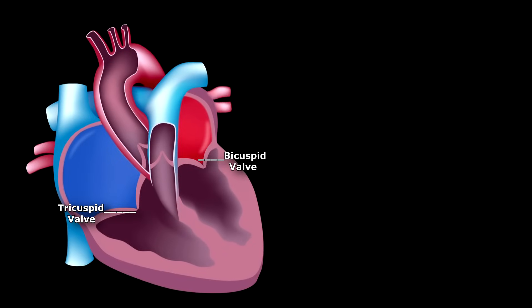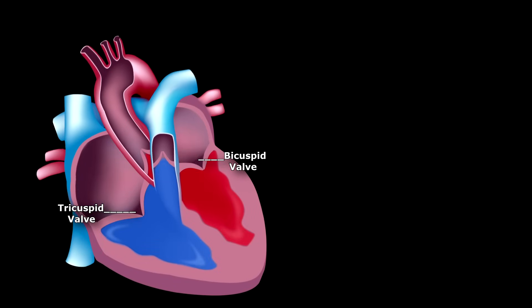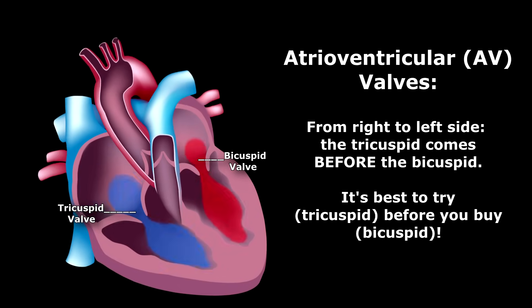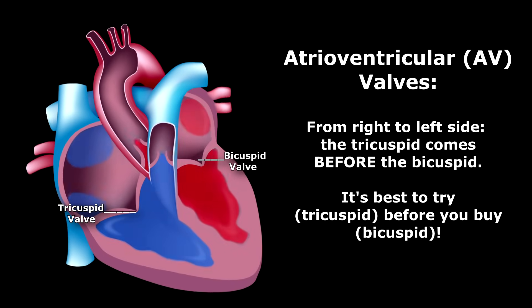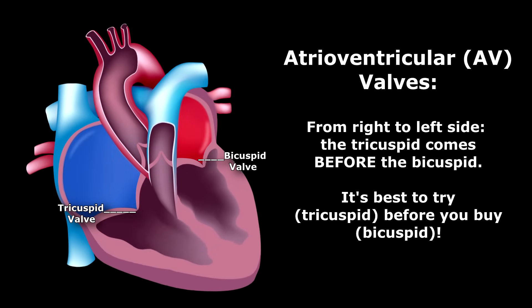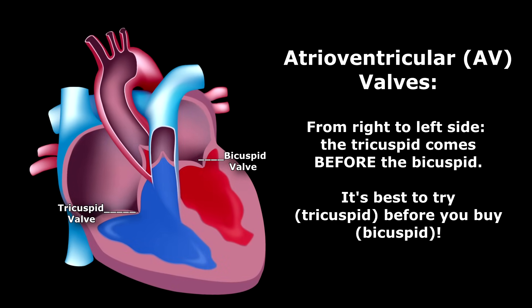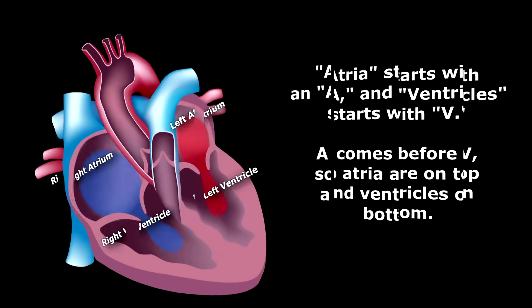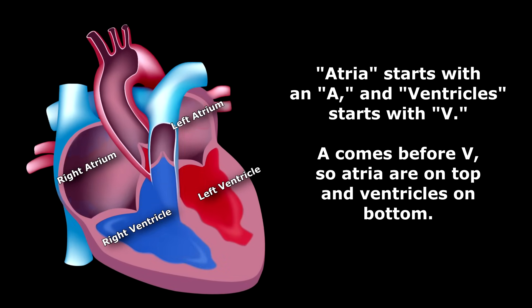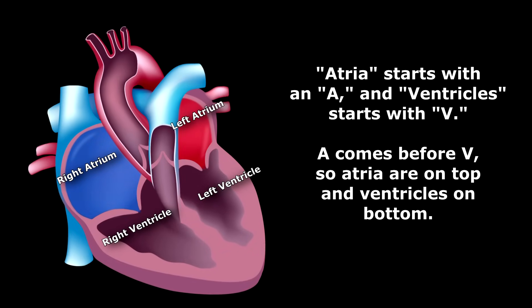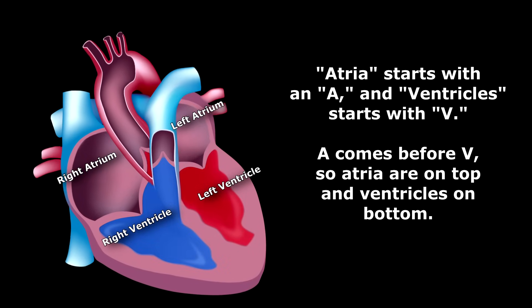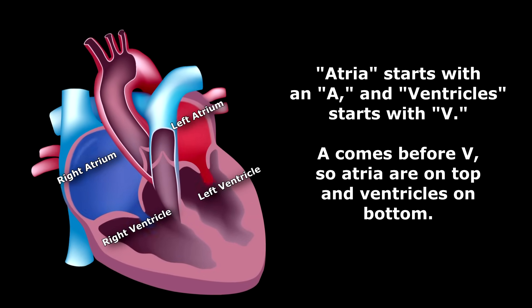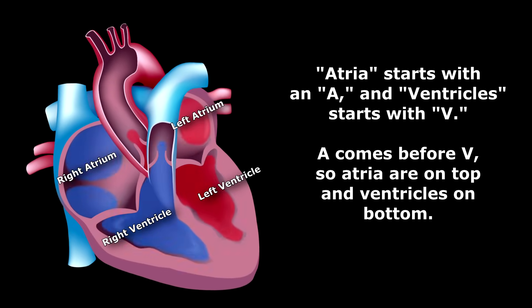Here are some memory tricks to help you remember this information. For the atrioventricular valves — the tricuspid and bicuspid — remember that everything starts on the right side, so the tricuspid valve comes before the bicuspid valve. Use the phrase: it's best to try before you buy. And if you're getting the atria and ventricles confused about which is the top and which is the bottom chamber, remember that the letter A for atria always comes before the letter V in the alphabet, so the atria are always on top of the ventricles.